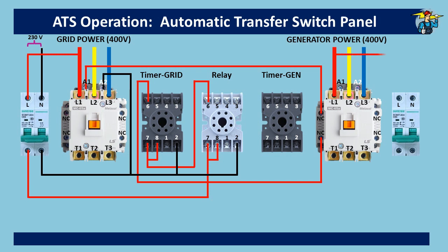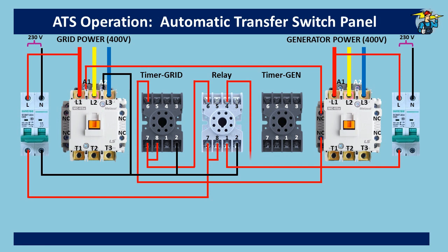On the generator side, we also take phase and neutral wires to the breaker first. The phase connection goes to the common port 1 of the relay. From the relay, the normally closed outlet port 4 takes power to the generator timer. Neutral wire is connected to timer port 2.